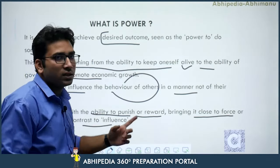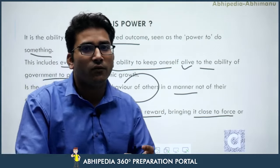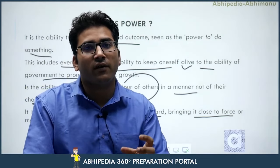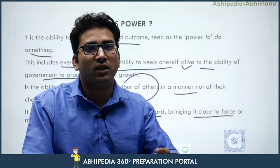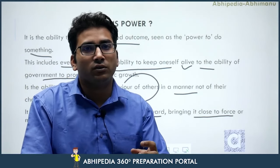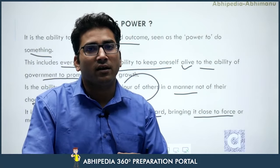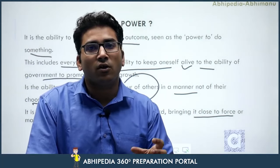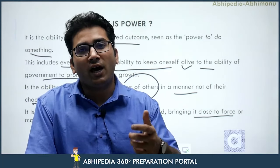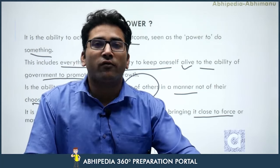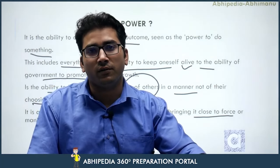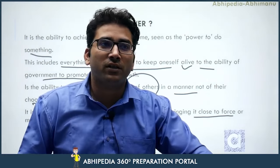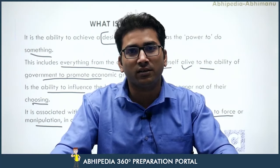This brings power close to force or manipulation, in contrast to influence. Influence is associated with authority and signifies soft power — based on rationalism, toleration, and understanding. Coercion and force, on the other hand, are the hallmarks of the use of power by any organization or individual. That is the key difference between authority and power. Thank you — I hope you understand these two terms and their meanings comprehensively. We'll meet on the next day with the next topic.